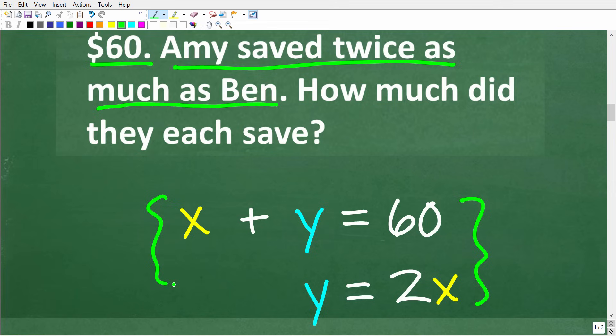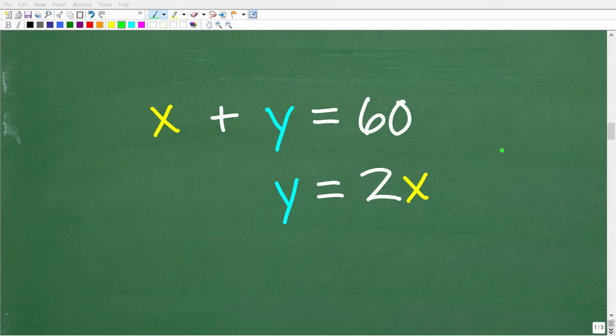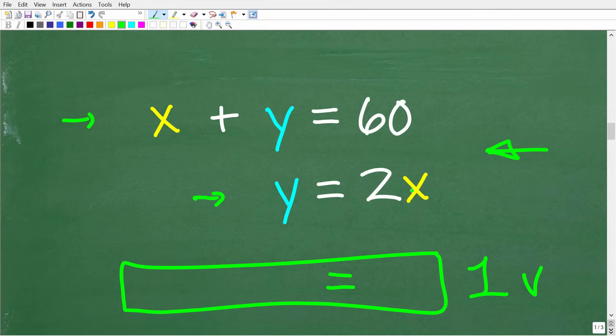Now we're going to go ahead and take a few algebraic steps to solve this system. Now that we have our system, what we need to do is solve for these variables X and Y. So the main idea here is that we want to build one equation with only one variable. So you can see here this equation has X and Y, and this equation right here also has X and Y. But what we want to do here is just get one equation with either all X's in it or one equation with all Y's in it.